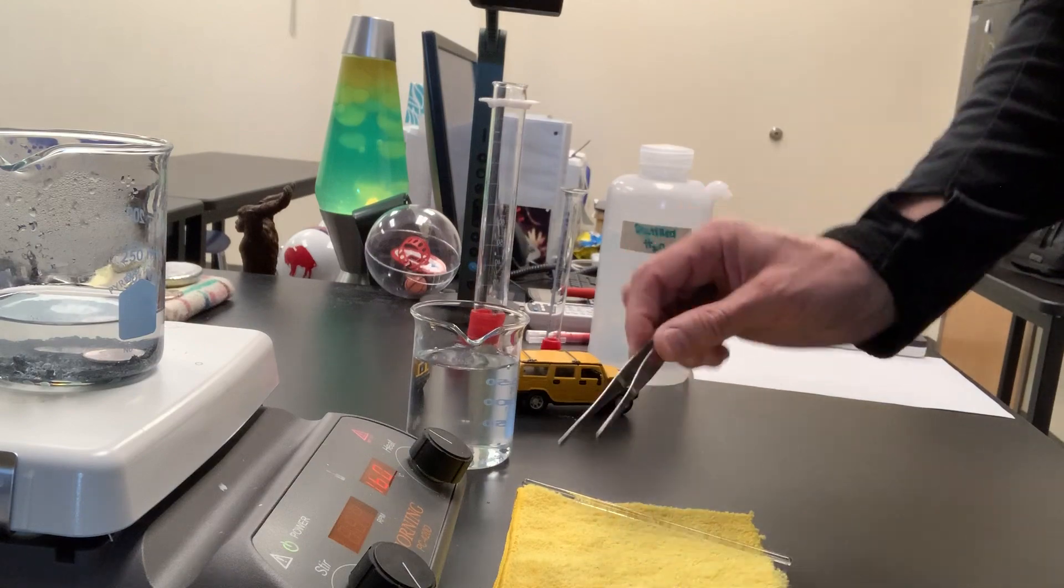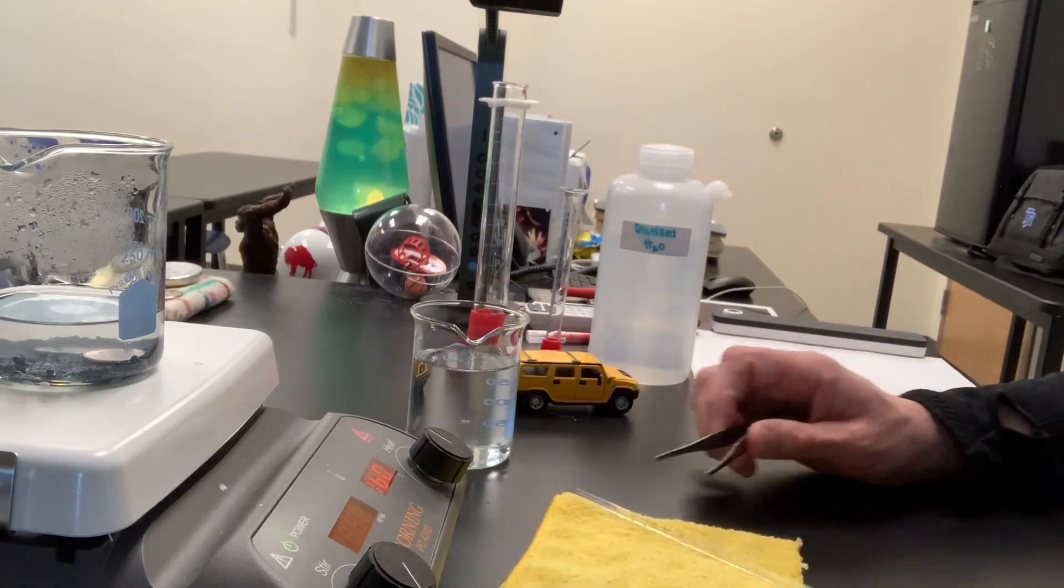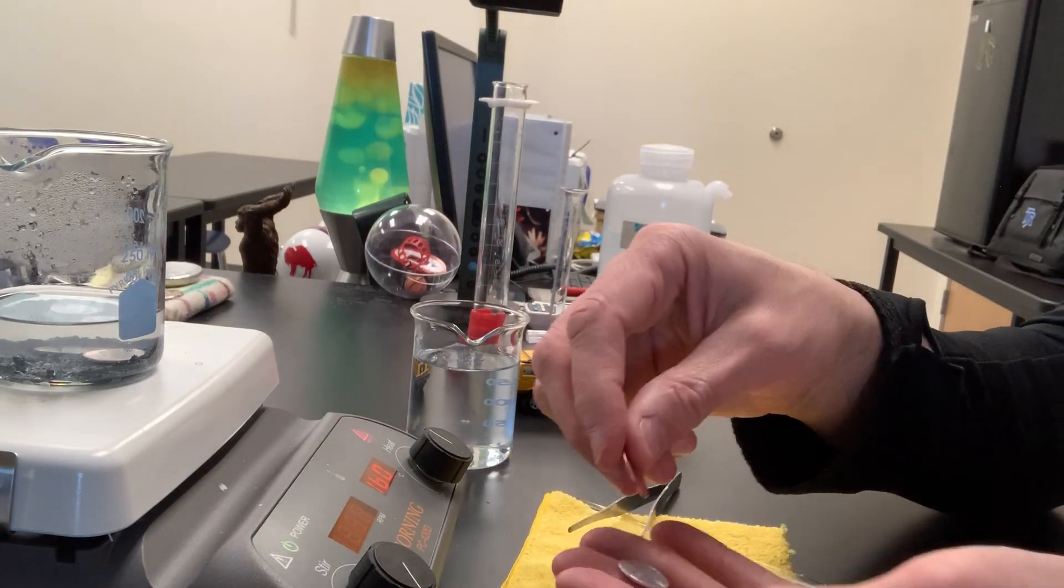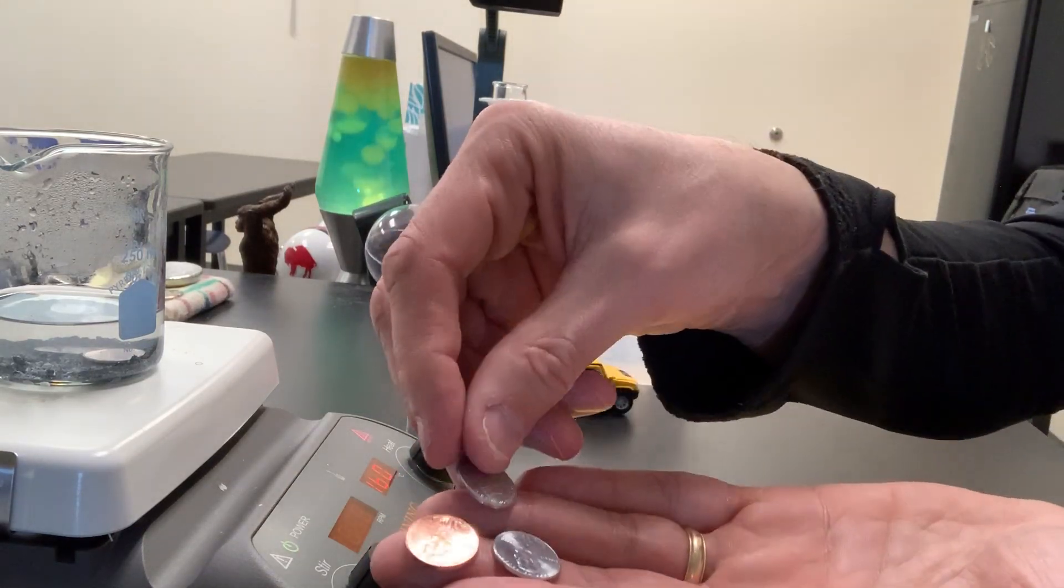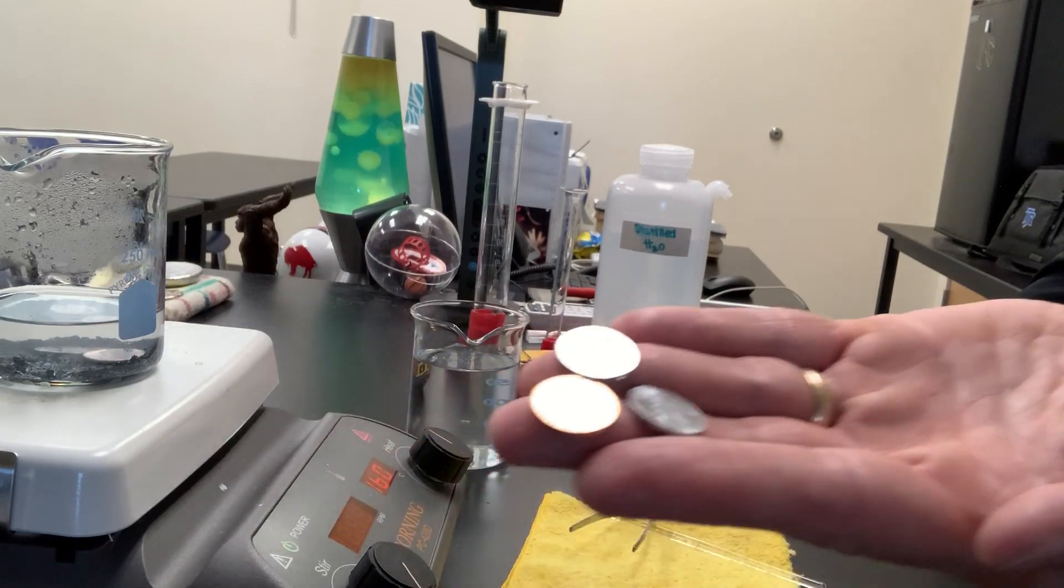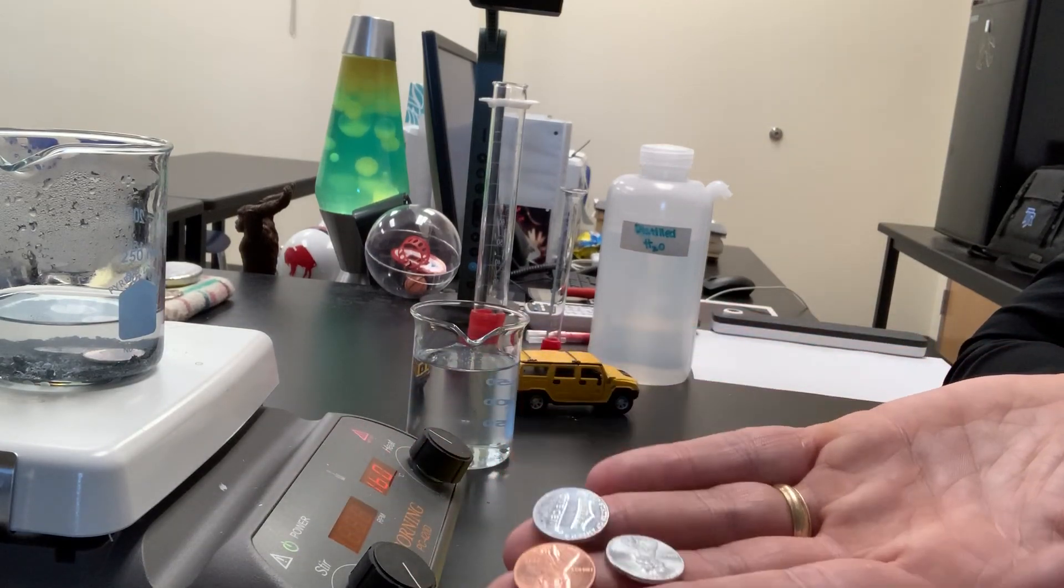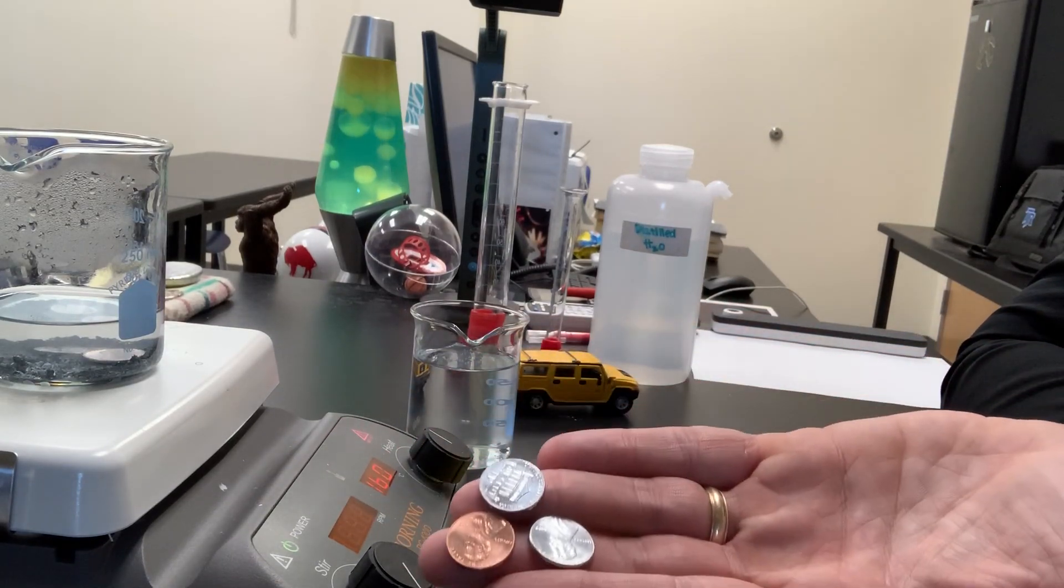I'll rinse the second one off and dry them just a little bit. When I take these out you can see there's the original copper penny, and then these two have been plated with some zinc. They appear to be silver. They almost look like dimes, don't they?